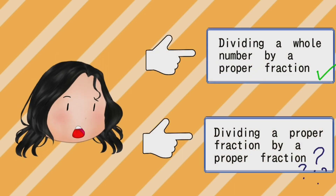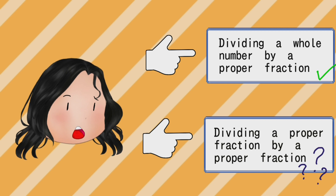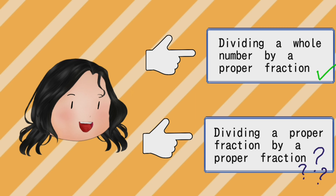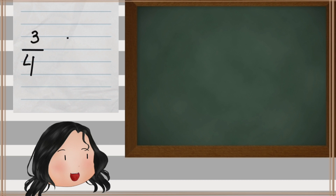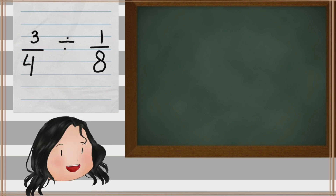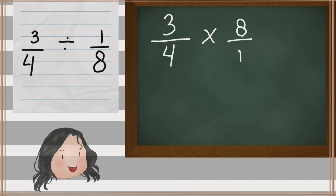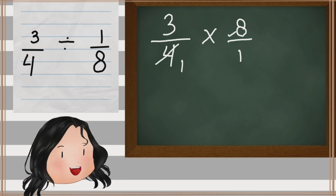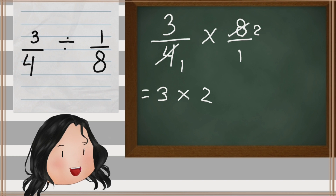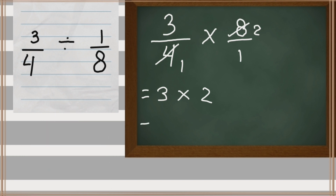How about dividing a proper fraction by a proper fraction? Let me tell you about it. For example, 3 fourths divided by 1 eighth. The same way — change it into multiplication. Switch the top and bottom number of the second fraction. Then you can multiply as usual: 3 times 2 equals 6.